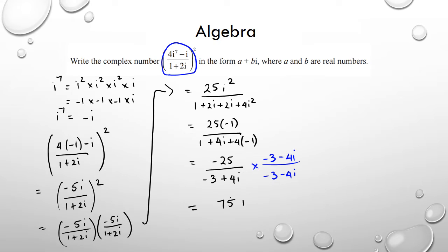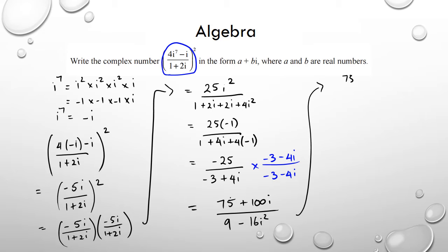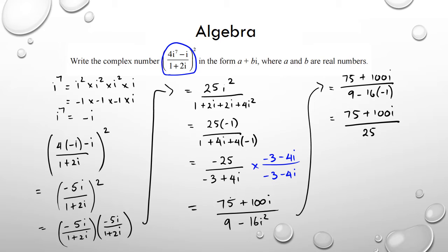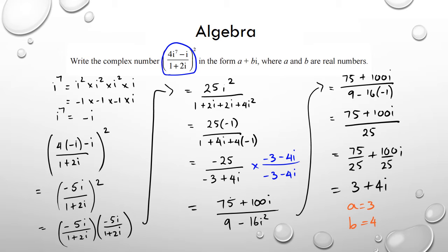That gives 75 plus 100i in the numerator. The denominator becomes 9 minus 16i², and substituting i² = negative 1 gives 9 minus 16 times negative 1, which is 9 plus 16 = 25. So the final answer is 75/25 plus 100/25 i, which is 3 plus 4i. Therefore a equals 3 and b equals 4.